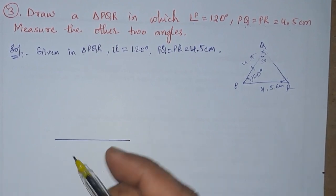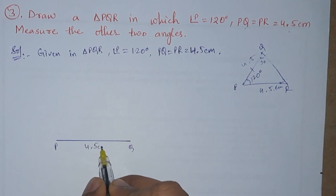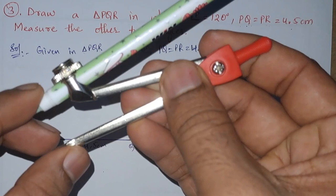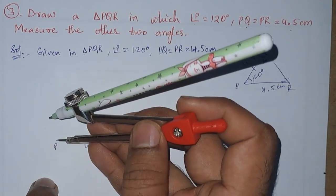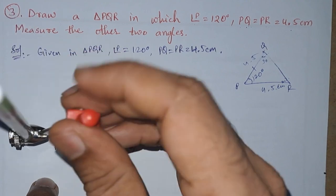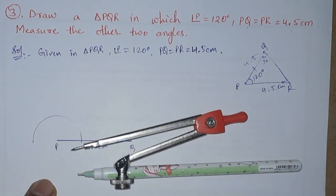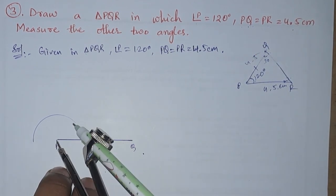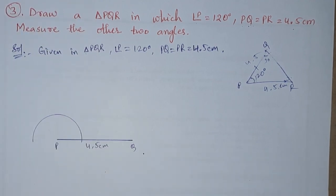Next, this one is P and Q. Now we will take the compass, take some radius, and from point P we need to draw a semicircle. So we got this semicircle.